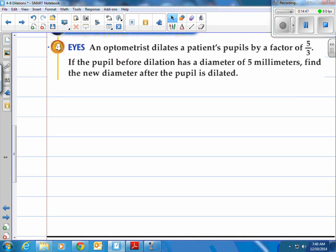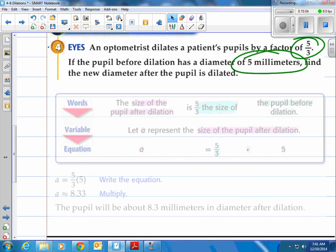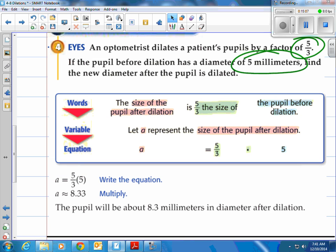Alright, how about this one? An optometrist dilates a patient's pupils by a factor of 5 over 3. If the pupil before dilation has a diameter of 5 millimeters, find the new diameter after the pupil is dilated. Well again, all we have to do is take the scale factor and multiply it by the value that you're looking to dilate. So it says it in words. It says the size of the pupil after dilation is 5 thirds, which is 1 and 2 thirds the size of the pupil before dilation, which means it's going to get larger. So all we're going to do is take 5 thirds and multiply by 5. And if you do that on a calculator, you'll see that the dilated pupil will then grow to be 8.33 millimeters. And they say 8.3 because it rounds the nearest tenth.